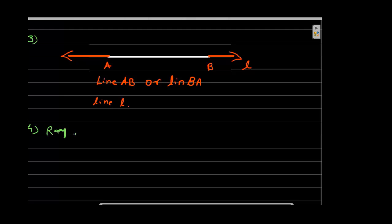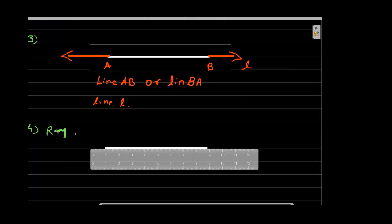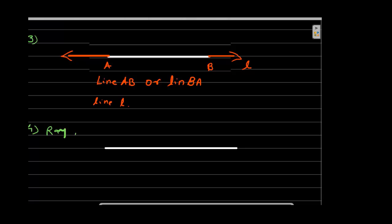Next content is ray. What is a ray? A ray is a part of a line. A ray starts at one point and goes on infinitely in one direction. The starting point is point P, and Q is any point on this ray. It is read as ray PQ.